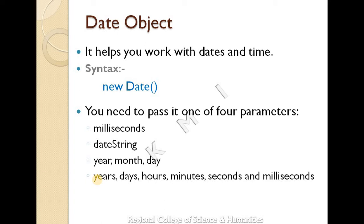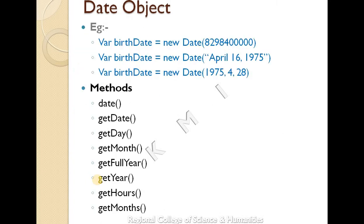For examples using the date object, you can define a variable like birthdate or x equal to new Date(). You can pass milliseconds or year, month, and date as parameters.